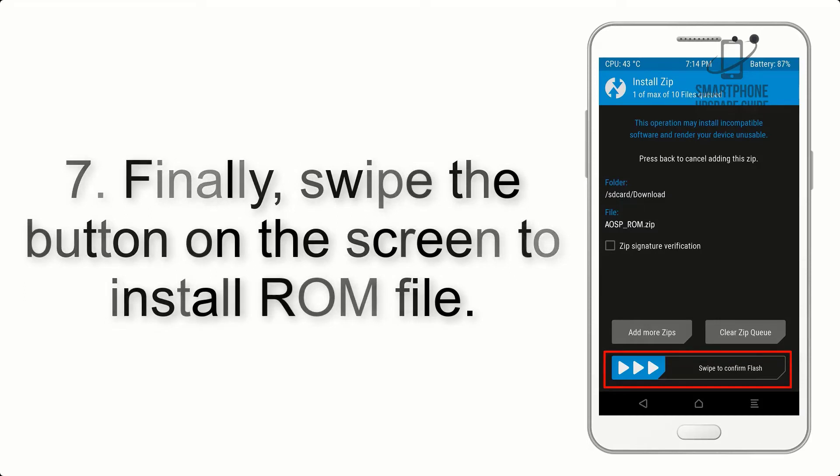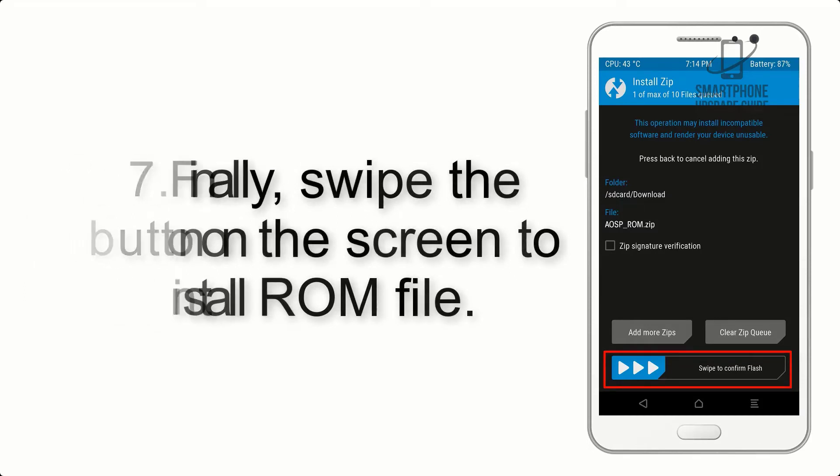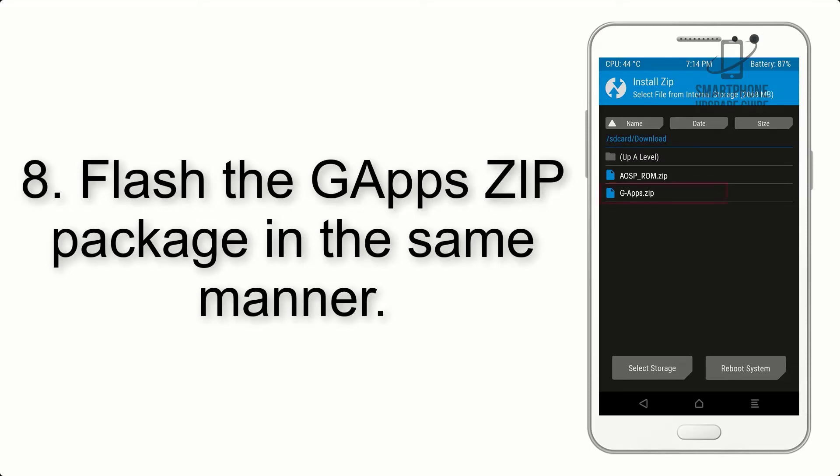Step 6: Navigate to the storage and select the ROM zip file. Step 7: Finally, swipe the button on the screen to install the ROM file. Step 8: Flash the GApps zip package in the same manner.